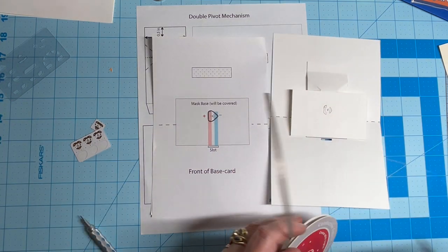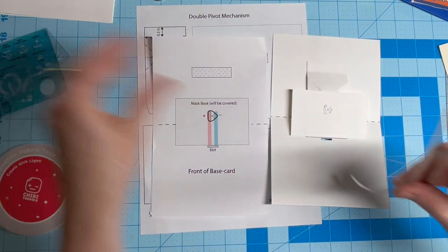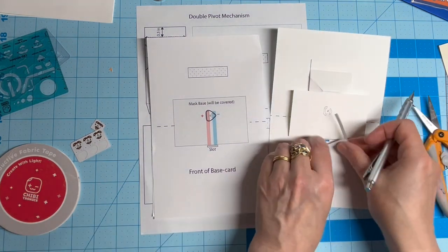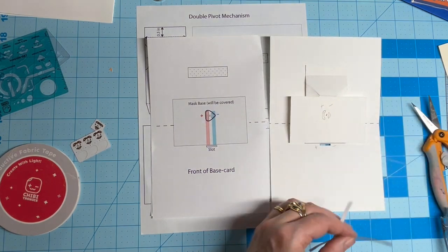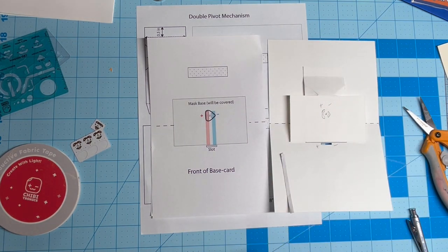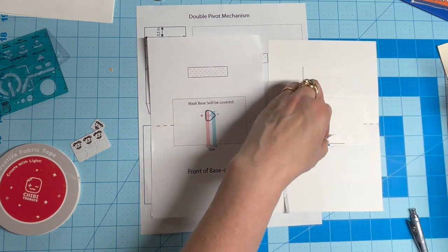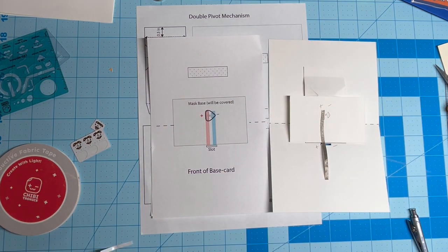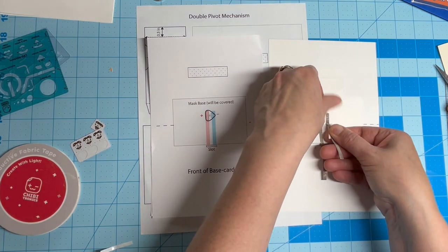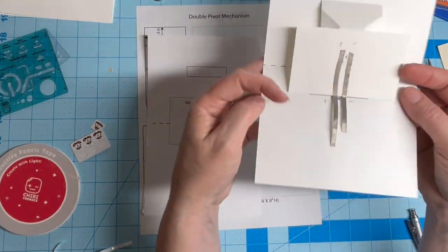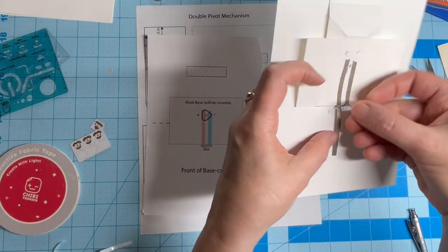Using the circuit diagram as a guide, the next step is to cut two pieces of conductive fabric tape and lay them down parallel to one another. The positive trace should be on the left and the negative trace on the right. I find it helpful to leave a little bit of the protective backing on them to make it easier to thread them through the slot.